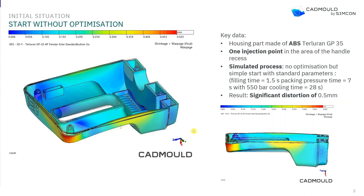So this area, which should connect to another part, doesn't fit that well and needs improvement. This part is made of ABS without any fibers. The things I'll show today work best without fiber reinforcements, because fiber reinforcements have a very large effect on warpage. This approach works better for unreinforced materials. The gating point is over here.